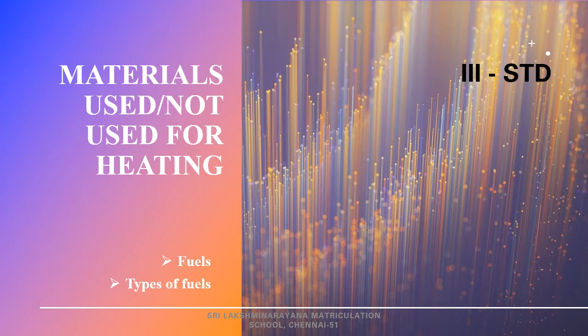Substances when burnt give out heat, but they produce less amount of heat energy, so they are not used for heating purposes. Some examples of these are paper, firewood and dry leaves. These can be burnt to give out heat energy, but they are not used for heating purposes.